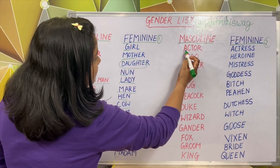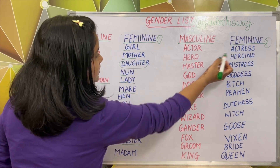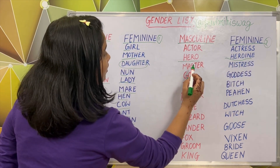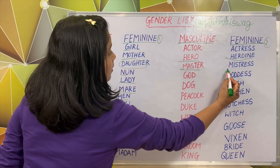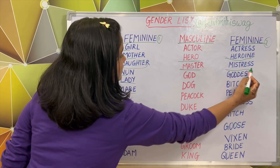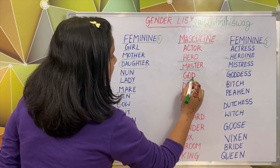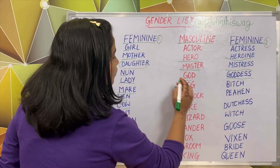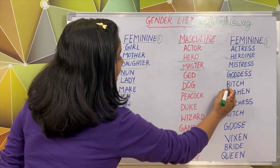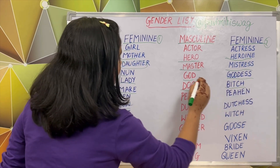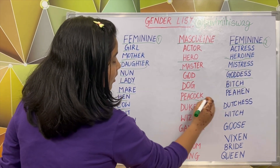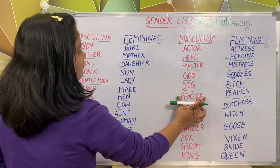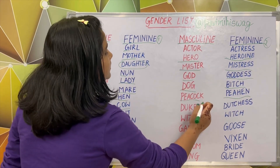Actor — actress. Hero — heroine. Master — mistress. God — goddess. Dog — bitch. Peacock — peahen. The feminine gender of peacock is peahen.